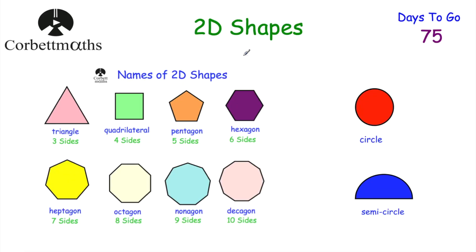Let's start off by looking at two-dimensional shapes. A shape with three sides is called a triangle, four sides a quadrilateral — and we'll look at different types of triangles and quadrilaterals in a moment. Five sides is a pentagon, six a hexagon, seven a heptagon, eight an octagon, nine a nonagon, and ten a decagon. It's also important to know your circle and semicircle.